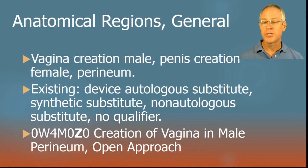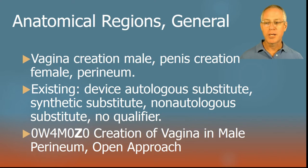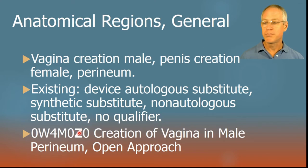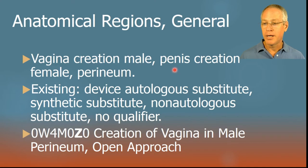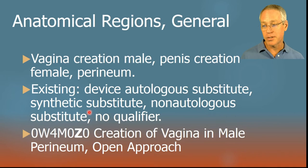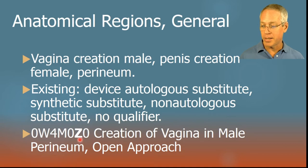One more change in anatomical regions general: gender confirmation surgery housekeeping. We're removing the no-device qualifier (Z) for creation of a vagina in the male perineum and creation of a penis in the female perineum. Autologous substitute is almost always used, occasionally with synthetic or non-autologous substitute. The no-device option is simply never done — just like joint fusions without grafts — so we remove it.